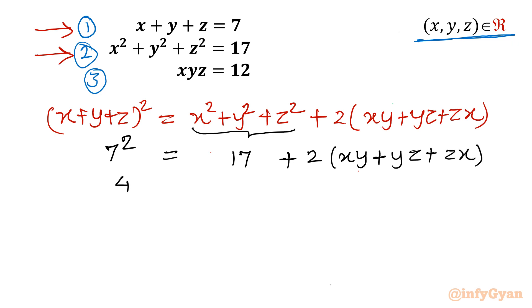49 minus 17 equal to 2 times xy plus yz plus zx. So this is 32. And if I divide by 2, I will be writing straight away xy plus yz plus zx, and this value I can write 16.